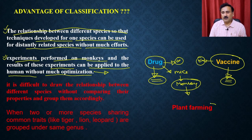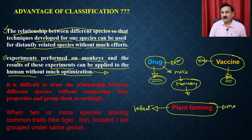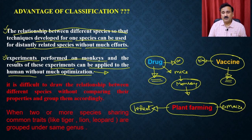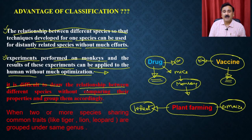This is also true for plant farming. If you have derived a combination of soil or other parameters for wheat, the same can be used for maize, because maize and wheat are both monocots belonging to the same group. The same is true for rice. Classification also gives contrasting features between different groups, which helps in comparing properties and grouping them accordingly. For example, lions, tigers, and leopards all belong to the same genus and are all carnivores, meaning they take meat as their source of energy.